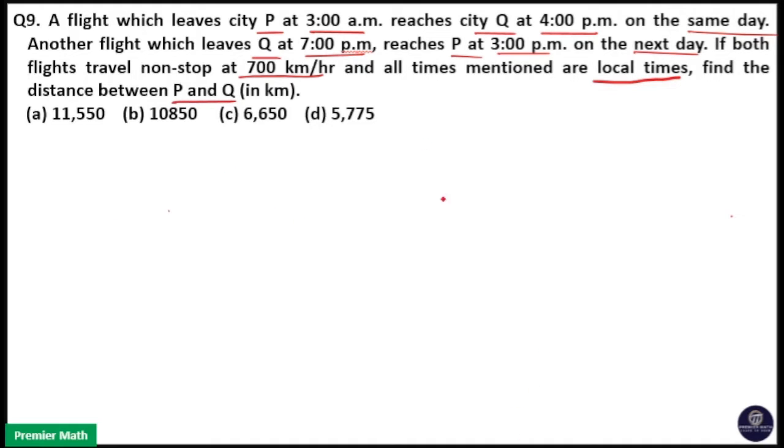Here, a flight which leaves city P at 3 a.m. reaches city Q at 4 p.m. on the same day. Another flight which leaves city Q at 7 p.m. reaches city P at 3 p.m. on the next day. And the flight travels non-stop at 700 km per hour. So, we have to find the distance between P and Q here.